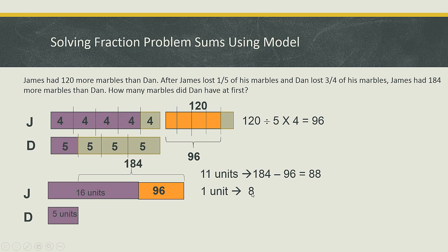The question asked for the marbles that Dan had at first. So Dan initially has 20 units. Be careful, it's not 4 units. You need to take the 20 units because you have converted them. So for Dan it's 20 units, so the answer will be 20 times 8, will be 160 marbles.